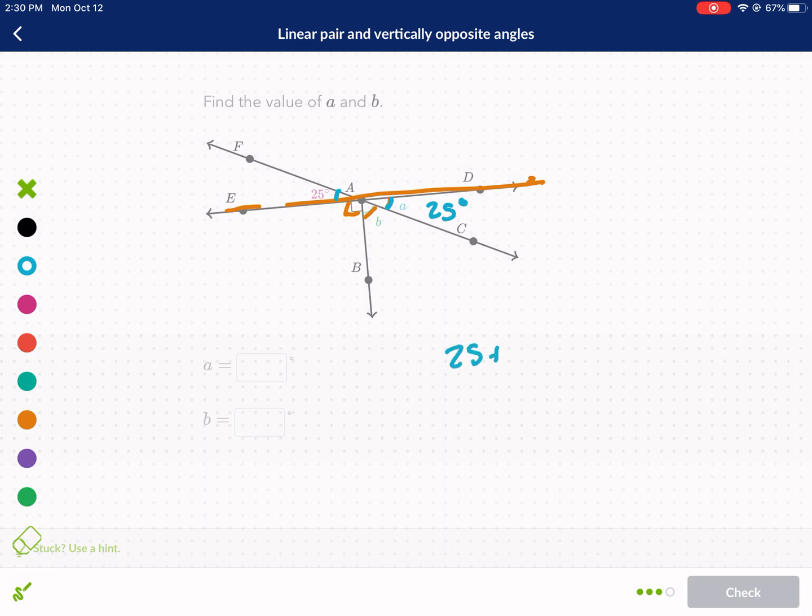So 25 plus 90 plus B is going to be equal to 180. So what is that? That's 105, not 115. You get 115.